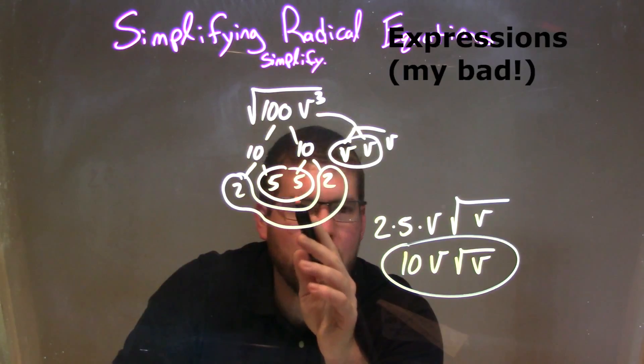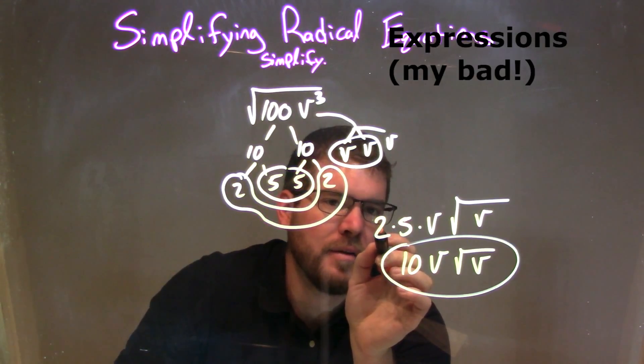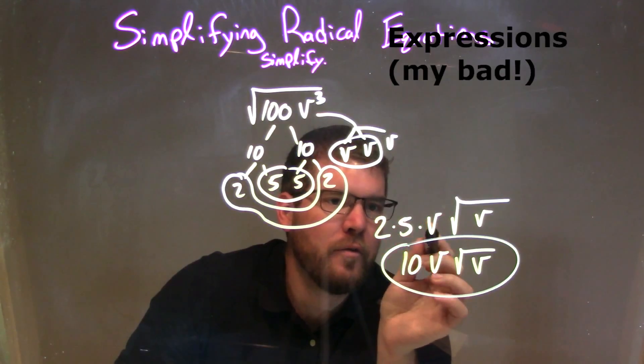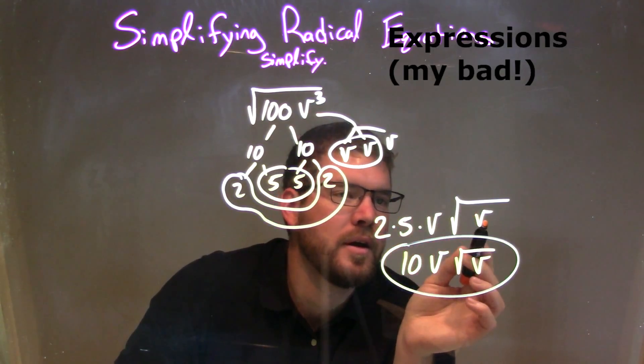Grab my pairs, circle my pairs, my 2s and my 5s. I put singles—put them on the outside, the pairs on the outside, right? 2 times 5 right there, and a pair of v's, right? Right there. And the inside was just one loner v, one uncircled, inside the square root.